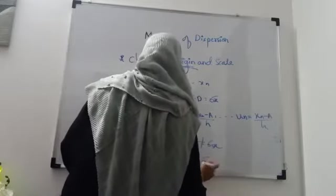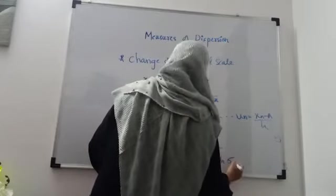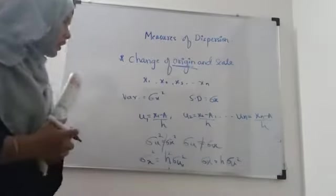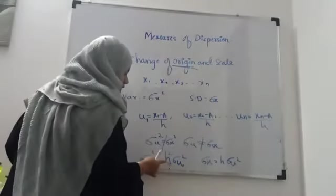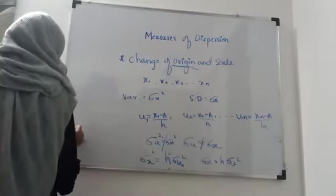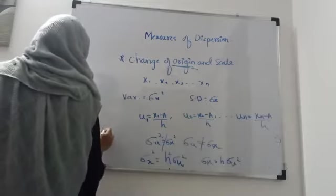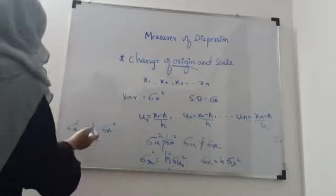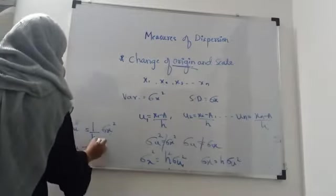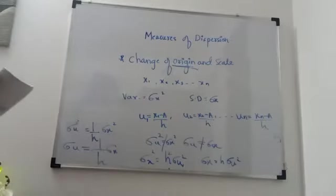Similarly, σ_x = h × σ_u. From here you can say: σ²_u = (1/h²) × σ²_x, and σ_u = (1/h) × σ_x. This is the change of origin and scale relationship.